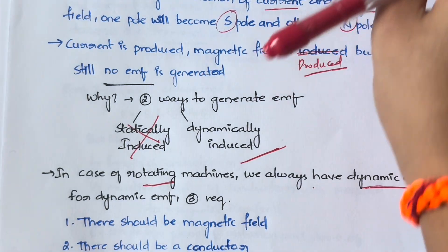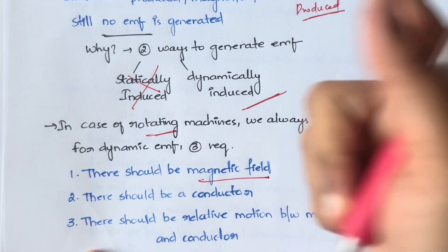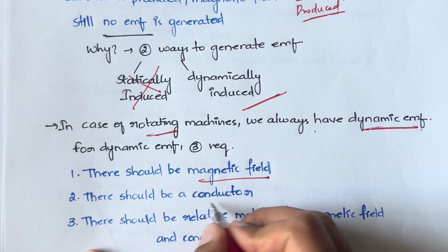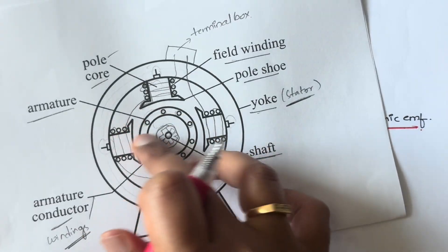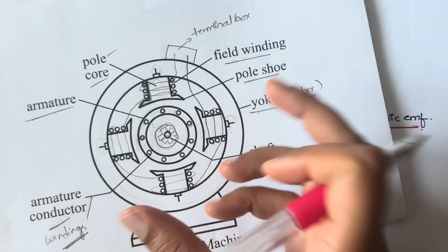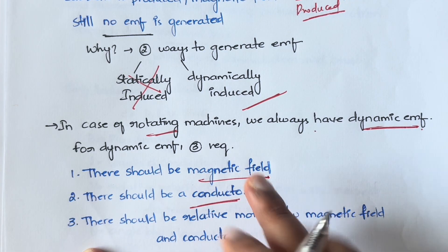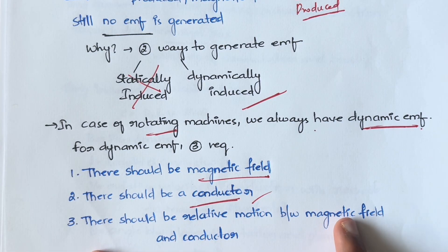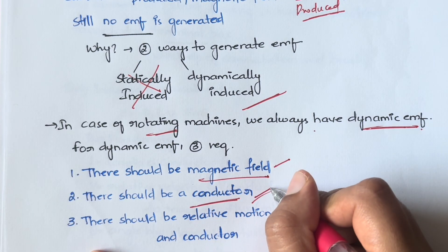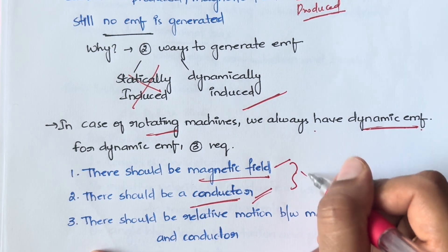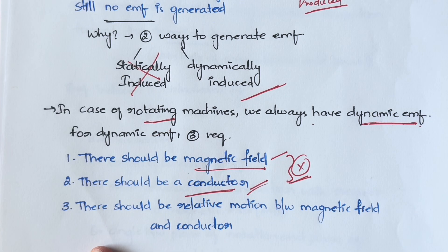The first requirement is there should be a magnetic field — yes, the magnetic field is generated. Second, there should be a conductor — yes, we have armature conductors, the armature windings made of copper, which is a conductor. Third, there should be relative motion between the magnetic field and the conductor. We have magnetic field separately and conductor separately, but there is no relative motion between them.